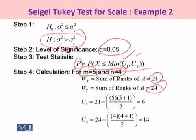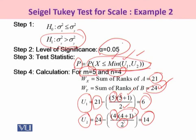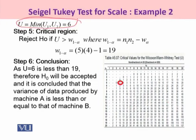Next, we calculate U1 and U2. U1 equals W_x minus m(m+1)/2, which is 21 minus 5×6/2, giving U1 = 6. U2 equals W_y minus n(n+1)/2, which is 24 minus 4×5/2, giving U2 = 14. To calculate the test statistic p, we compare U1 and U2 and pick the minimum. Since U1 = 6 is smaller than U2 = 14, the value U = 6 is selected as the minimum of U1 and U2.